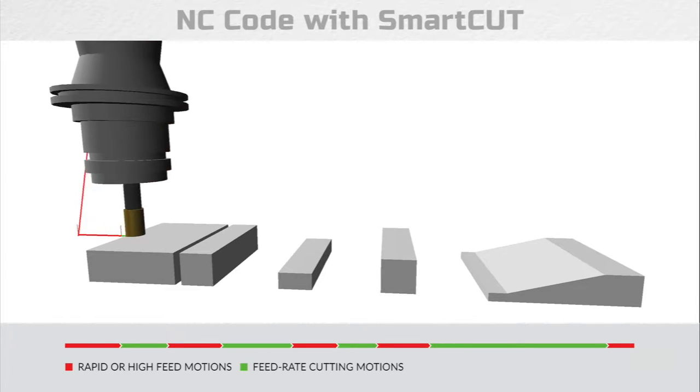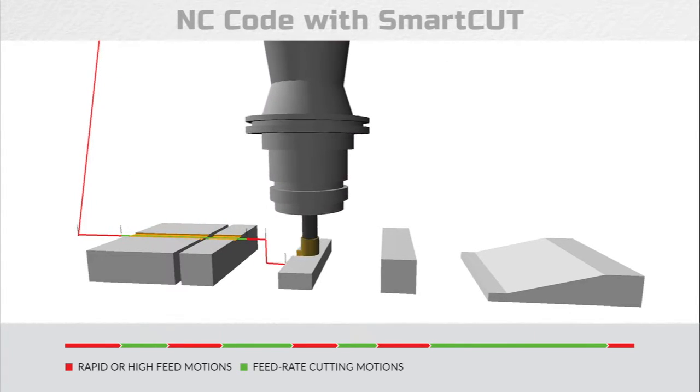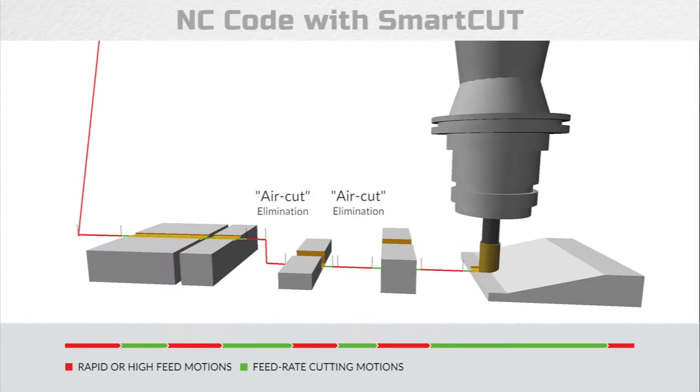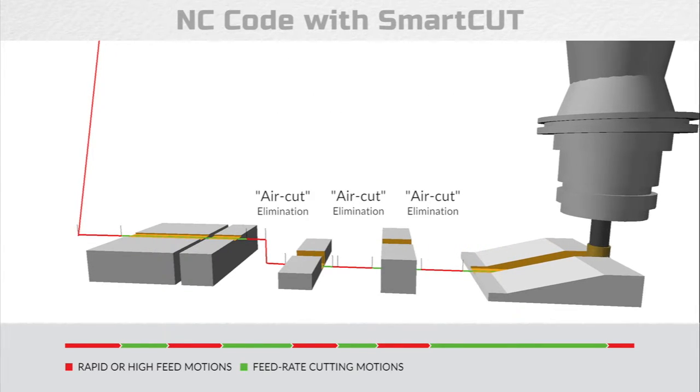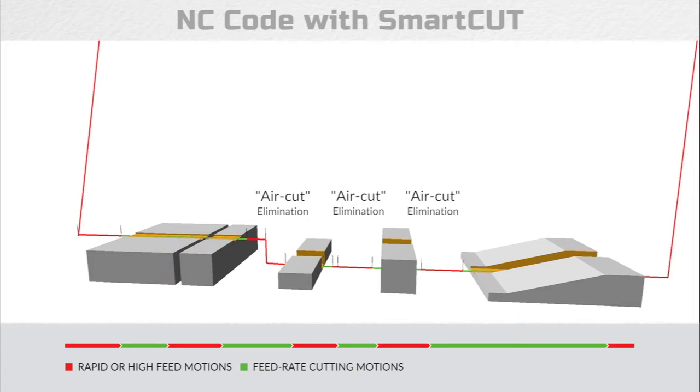In this example, we have enabled SmartCut. As you can see, the feed rate automatically speeds up while not engaged with the part and slows down just before engaging with the part. Air cuts have been eliminated and the result is decreased cycle time and tool wear.